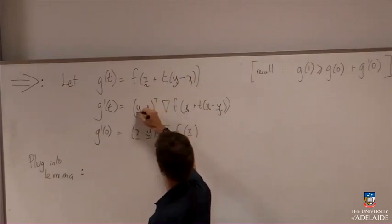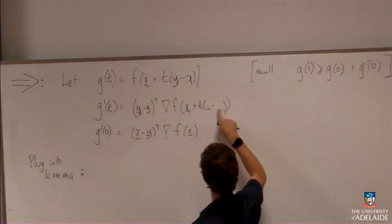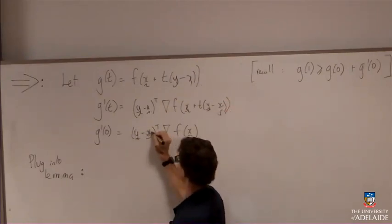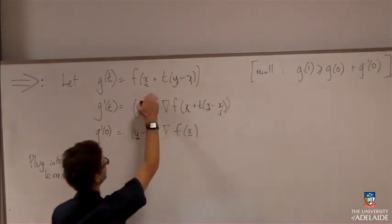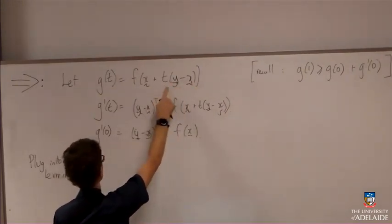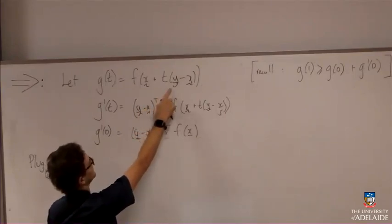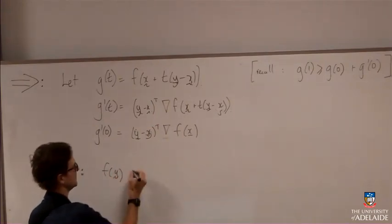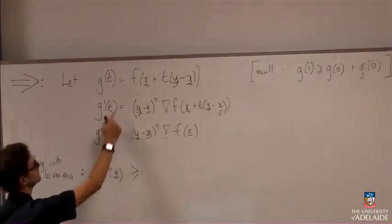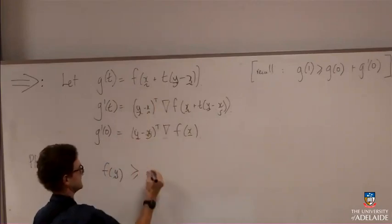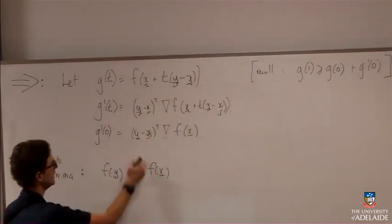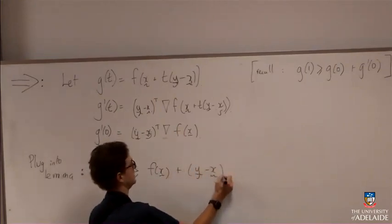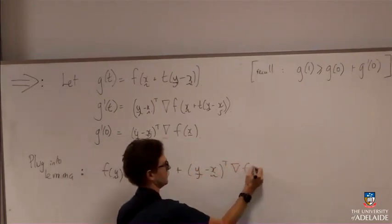Now, if this were a professional operation, at this point, we'd restart the video. But we're not, so we won't. We'll just fix that up. Okay, plug into the lemma. So plugging in t equals 1 here, the x cancels out, and I'm left with f of y. So f of y is going to be greater than g of 0. So plugging t equals 0 into that, and I'll get f of x plus g prime of 0, which is this thing.